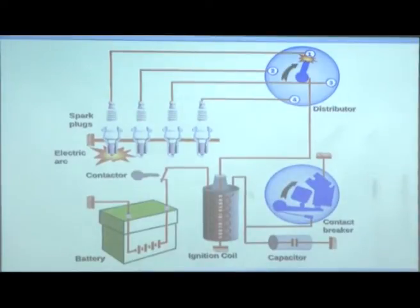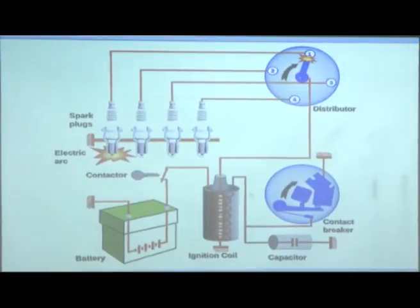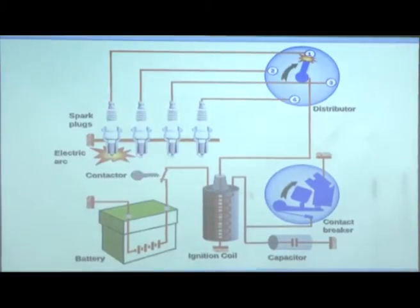The spark plugs are mounted on different cylinders in the cylinder head and are connected via a distributor. The distributor ensures which cylinder will fire and when, and this contact is connected to the crankshaft. Only one cylinder fires at a time — this is what the distributor ensures.